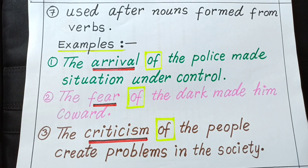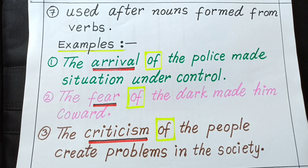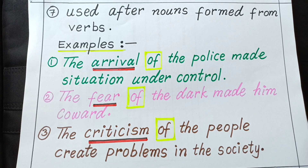Last example: 'The criticism of the people create problems in the society.' You can notice here that the preposition of is used after the word 'criticism'. Criticism is a noun, and immediately after the word criticism I have used preposition of.